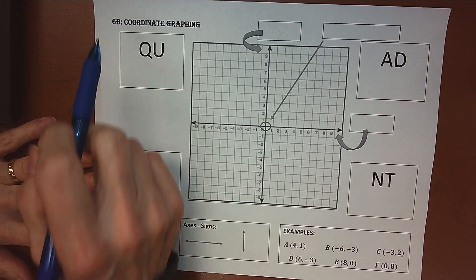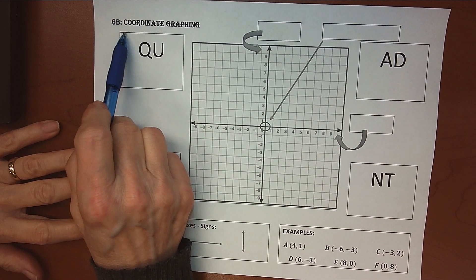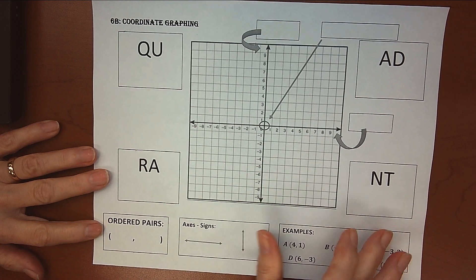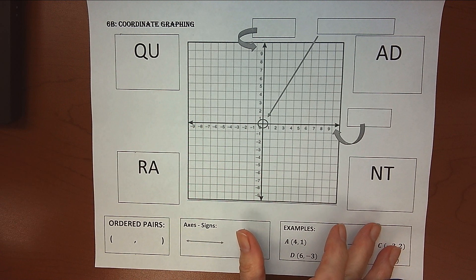Hey, y'all. This is our notes over Unit 6, Section B on coordinate graphing. This is a review. We've already taken notes over this, so this is going to be quick.